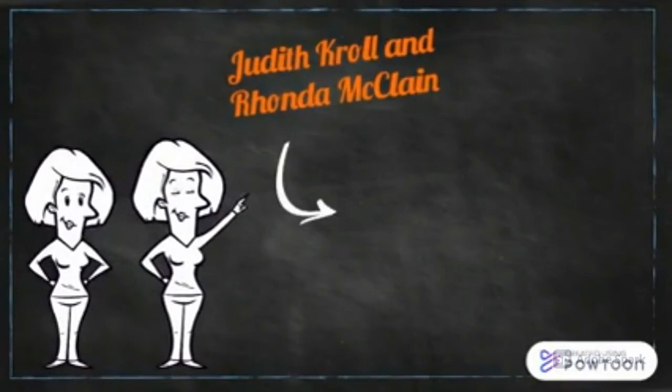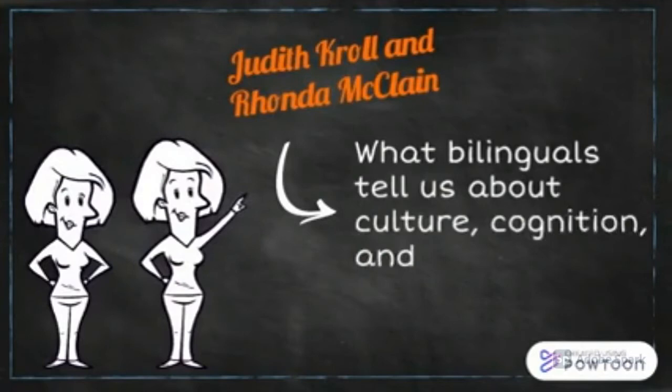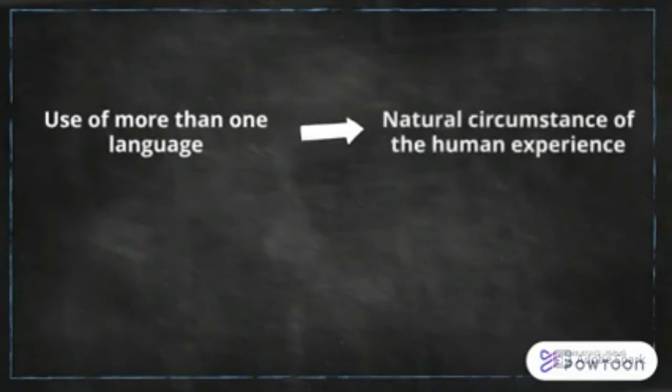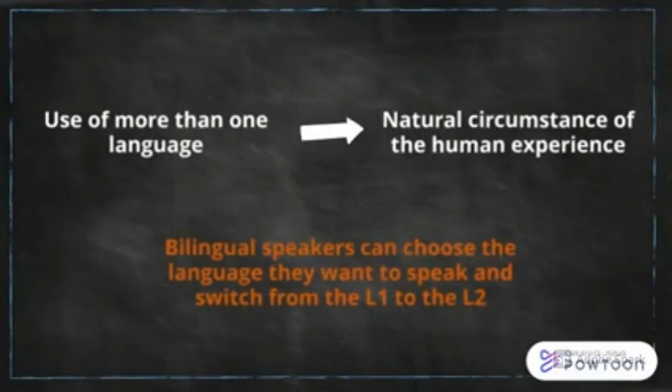In 2013, Judith Crowell and Rhonda McLean wrote a paper about bilingualism and they answered the question: what does bilingualism tell us about culture, cognition, and language? In the paper, the authors explained that the use of more than one language is a natural circumstance of the human experience, and they assured that bilingual speakers can choose the language they want to speak and switch from the L1 to the L2.